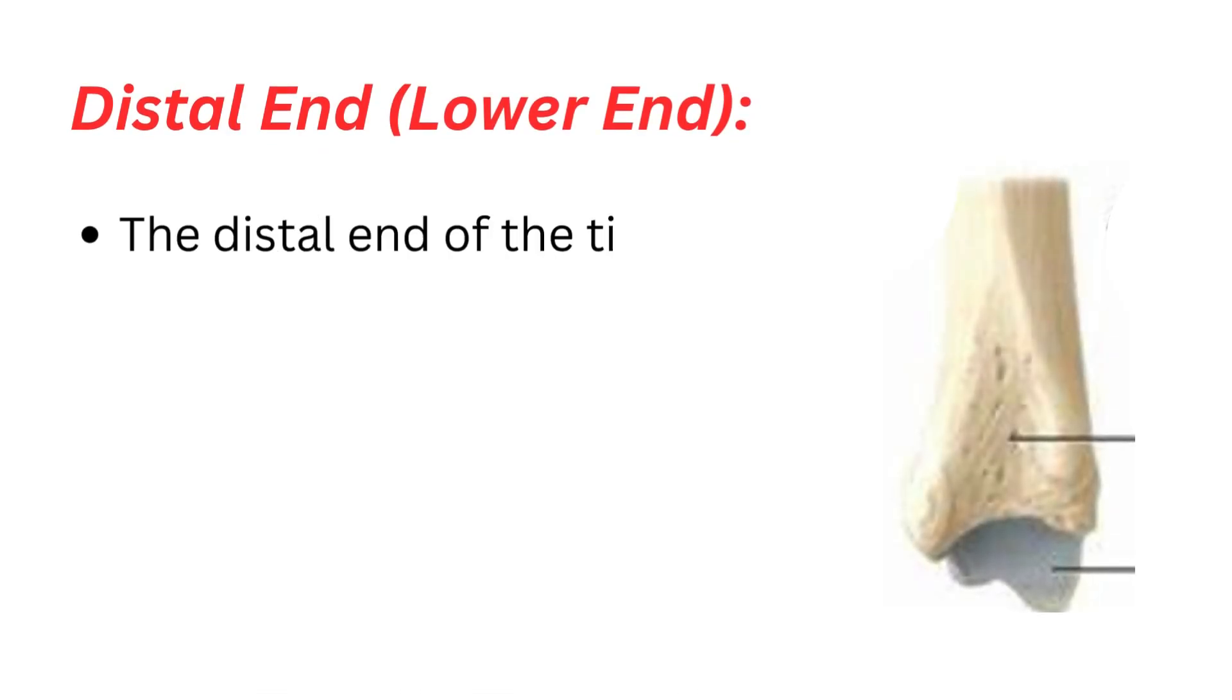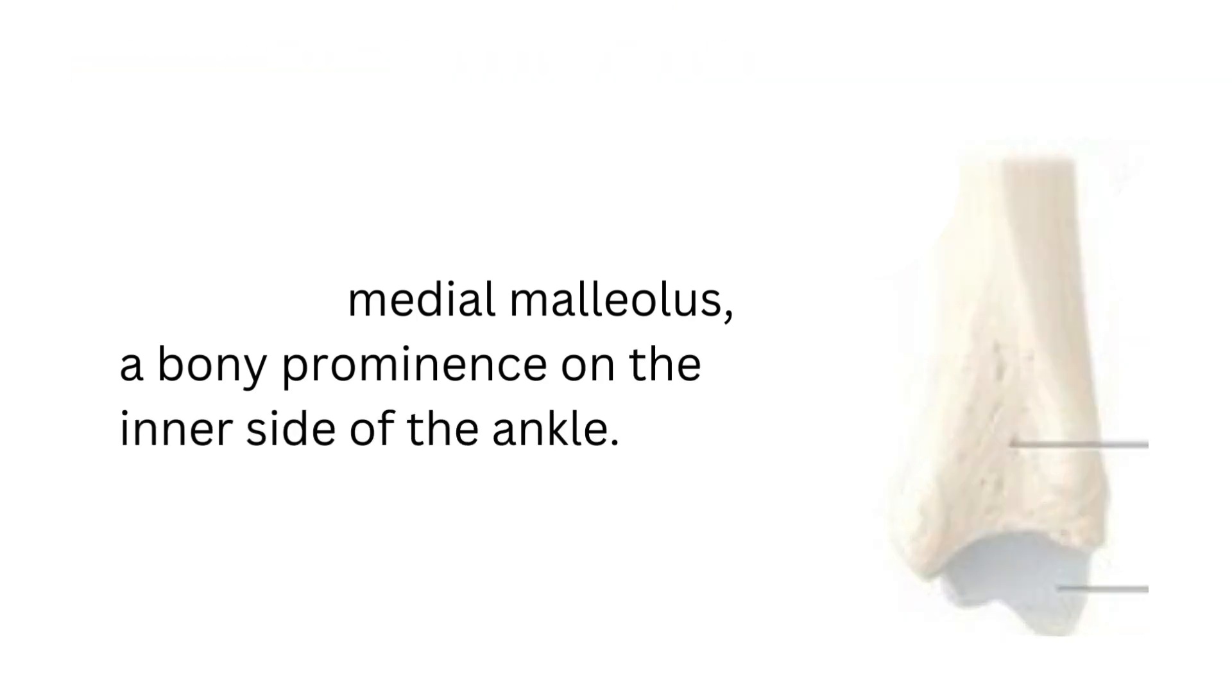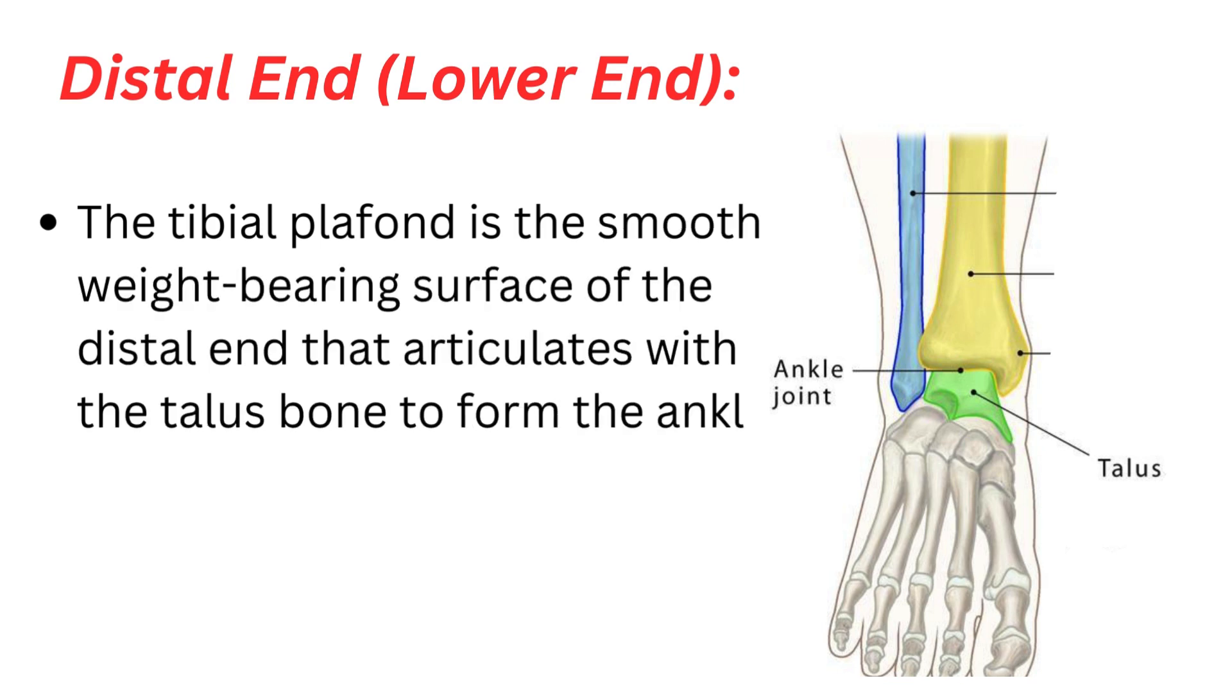Distal end, lower end: The distal end of the tibia forms the medial malleolus, a bony prominence on the inner side of the ankle. The tibial plafond is the smooth, weight-bearing surface of the distal end that articulates with the talus bone to form the ankle joint.